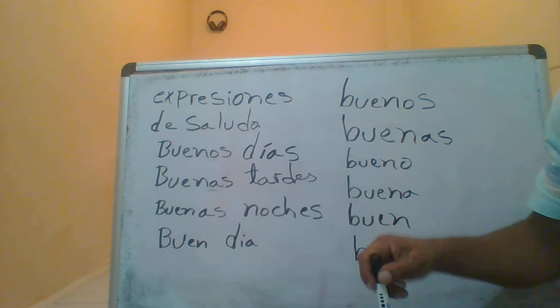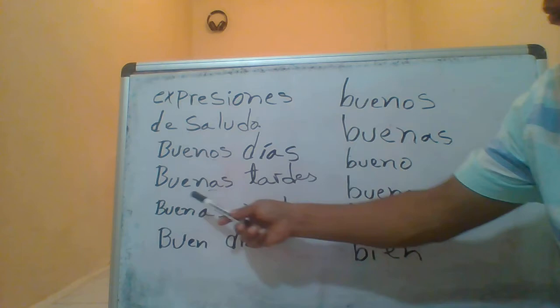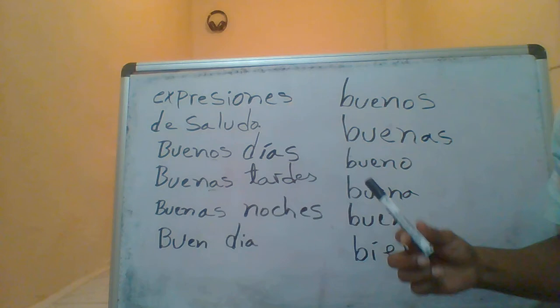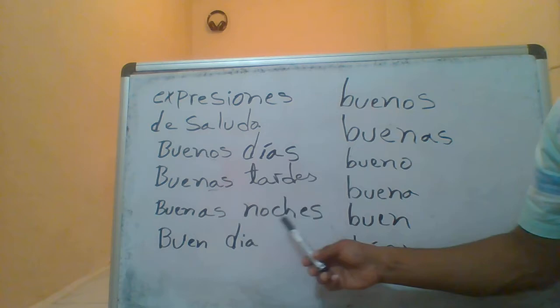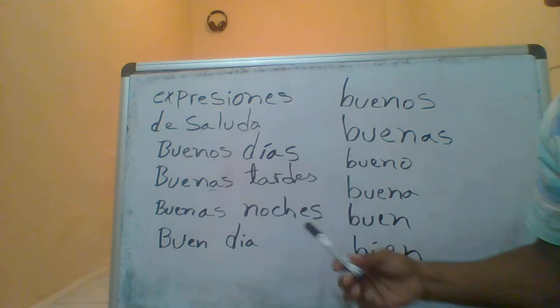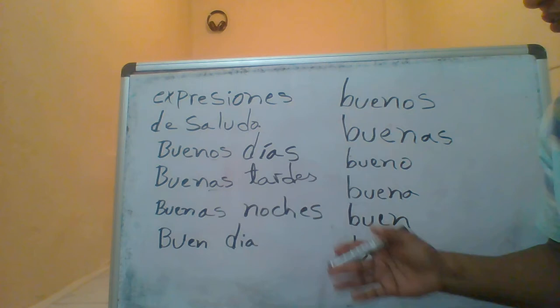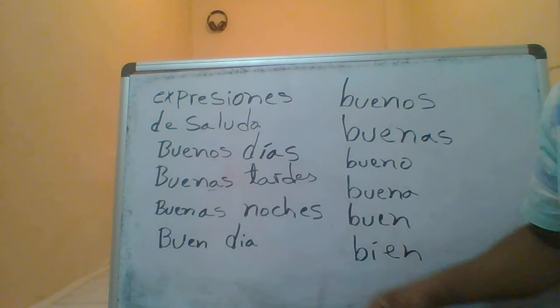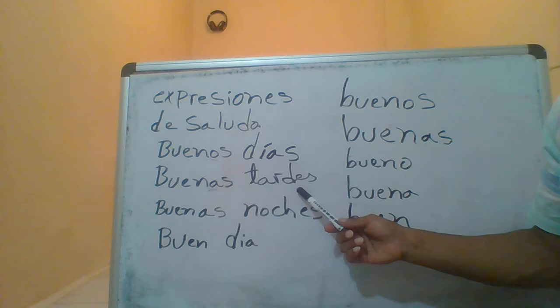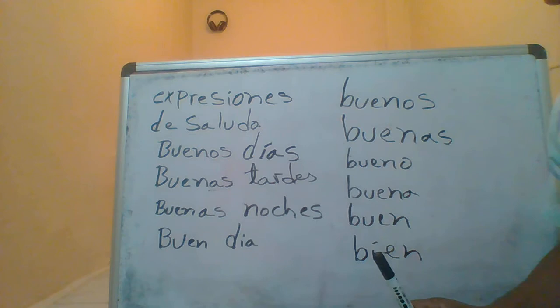We use 'buenos días' from the morning until 12 o'clock. 'Buenas tardes' — we use 'buenas tardes' after 12 o'clock until 6 o'clock. 'Buenas noches' — we use 'buenas noches' for good night, and this is after 6 o'clock. We don't use 'good evening' — we don't have that expression in Spanish; we go directly to night. So: 'buenos días' — good morning; 'buenas tardes' — good afternoon; 'buenas noches' — good night.